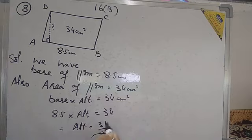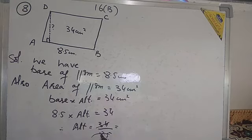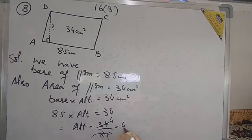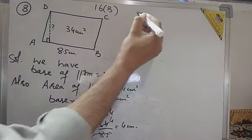When we calculate 34 divided by 8.5, the result is 4. So, altitude is equal to 4 cm. That was question number 8. Question number 9: what is the area of a square if its perimeter is 64 cm?